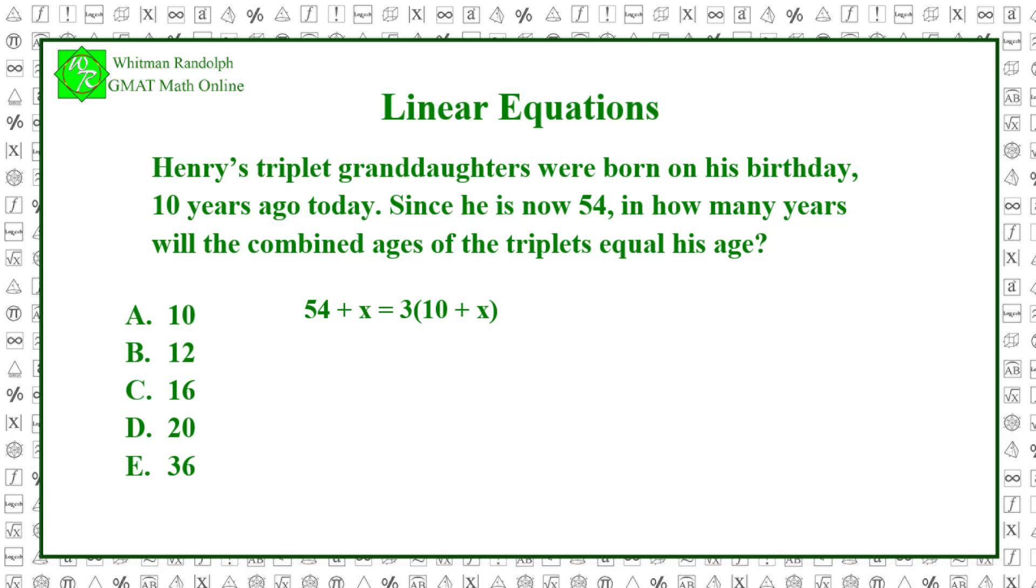Let's explain this equation. In x years, Henry will be 54 plus x years old, and the triplets will be 10 plus x years old. Since we're combining the triplets' ages, we multiply 10 plus x by 3. We then set these two quantities equal to each other, and that gives us the formula for when their combined ages will equal Henry's.